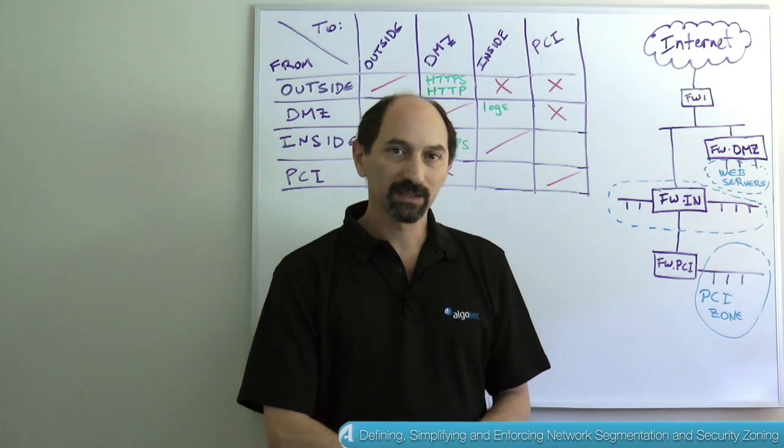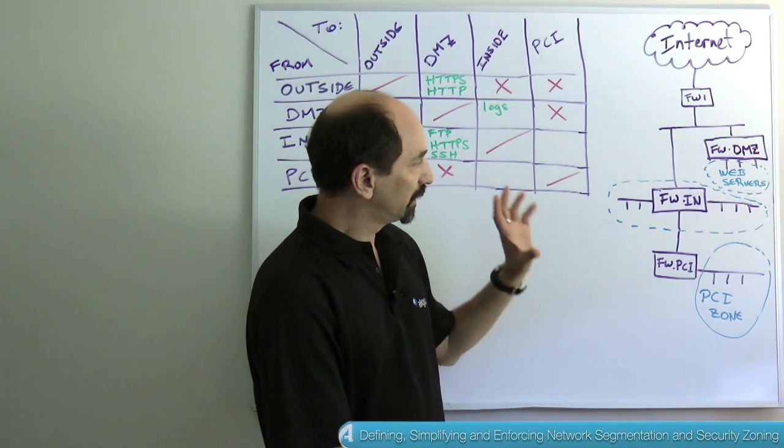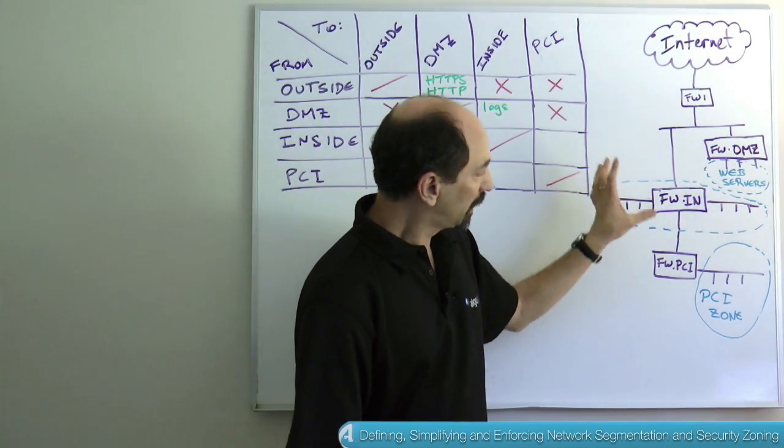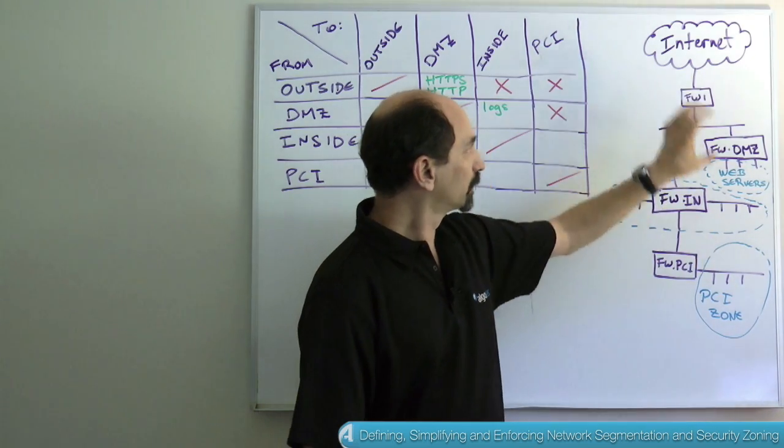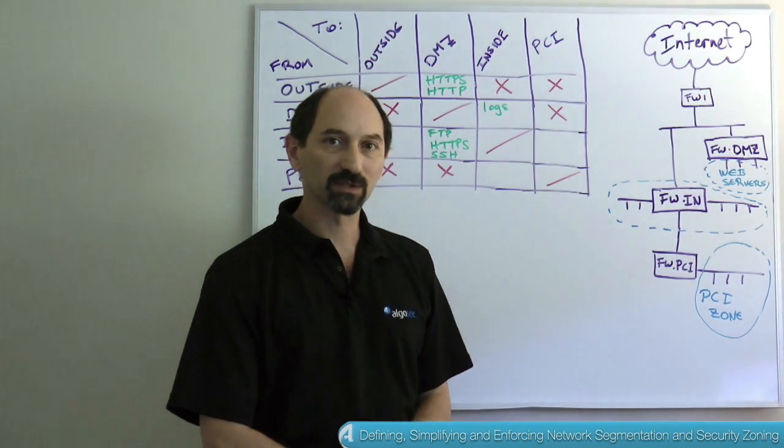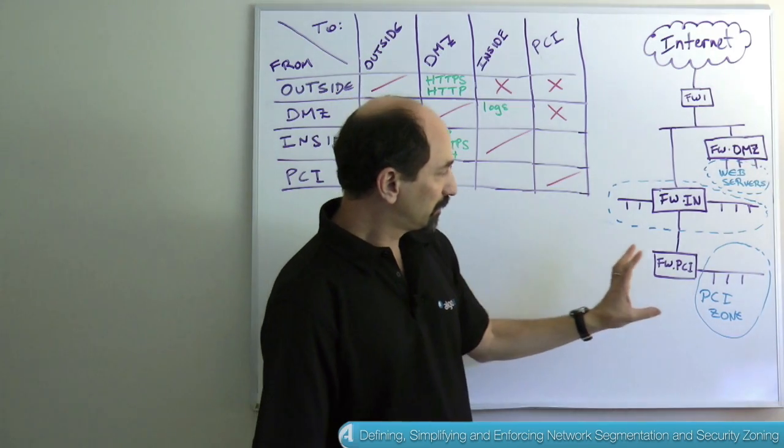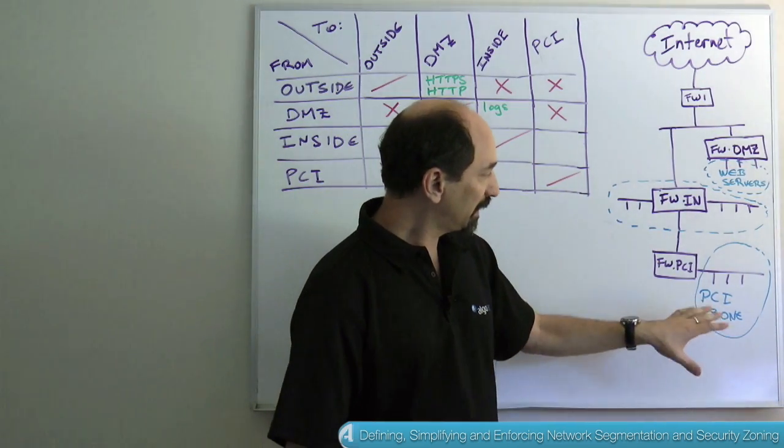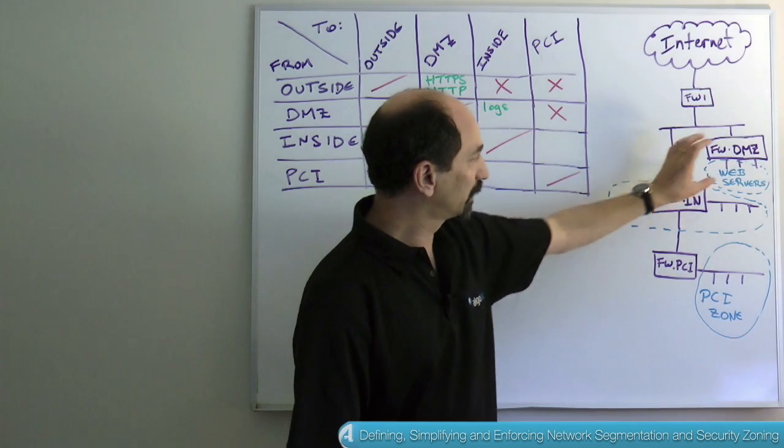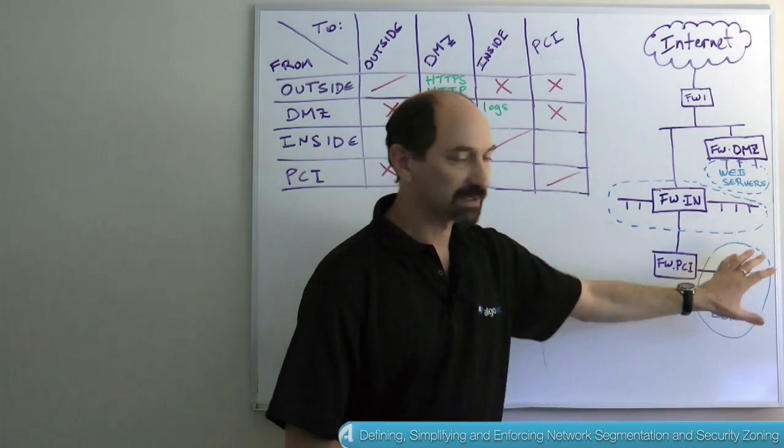What people have found is that it's convenient to organize the way you think about your network into security zones. So you can lump together groups of servers that are in various areas of the various segments of your network and give them a security zoning label. So you'd have your inside network and your web servers network and your PCI network.